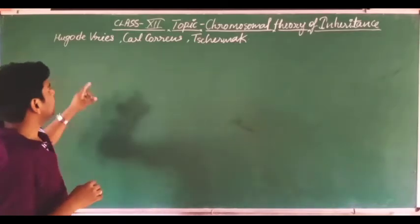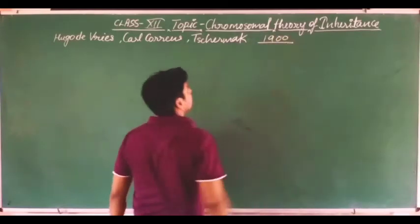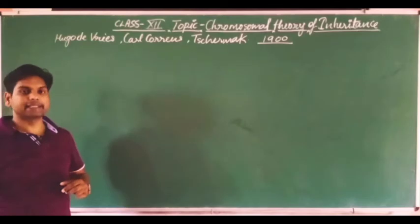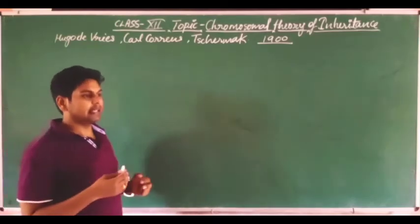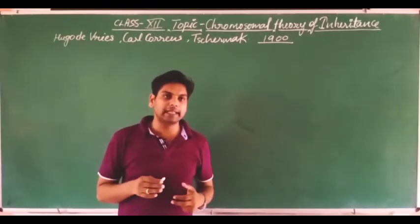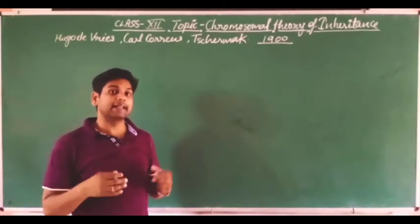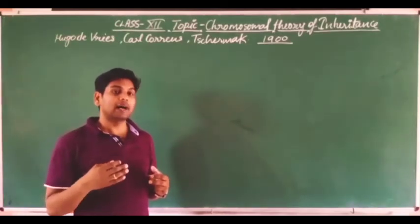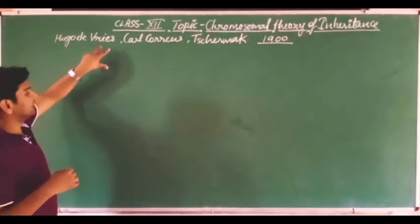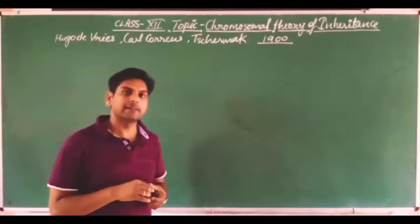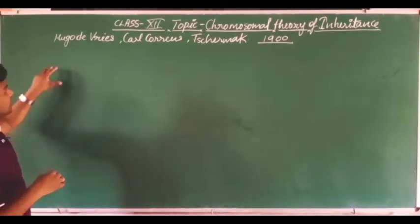These three scientists were Hugo de Vries, Carl Correns, and a third scientist. In 1900, Mendel's work was finally appreciated through their re-experimentation. They gave credit to Mendel for his original ideas about genetics, which were incredible. That is why, due to these three scientists, Mendel is known as the Father of Genetics.